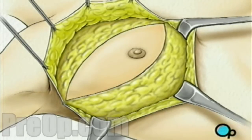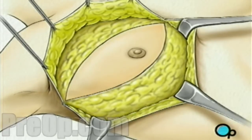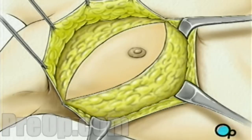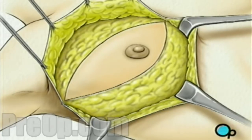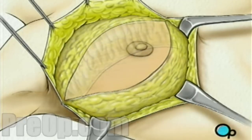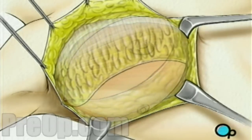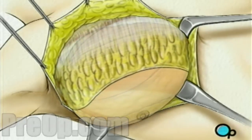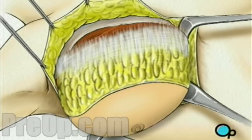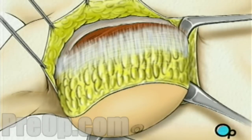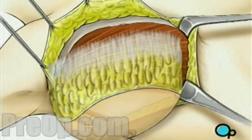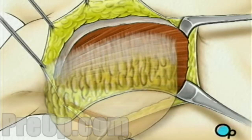Beginning at the clavicle, or collarbone, the surgeon then begins to carefully cut the breast tissue away from the muscles that lie just beneath. When the breast has been completely freed, it is lifted away, exposing the top layer of muscle called the pectoralis major.